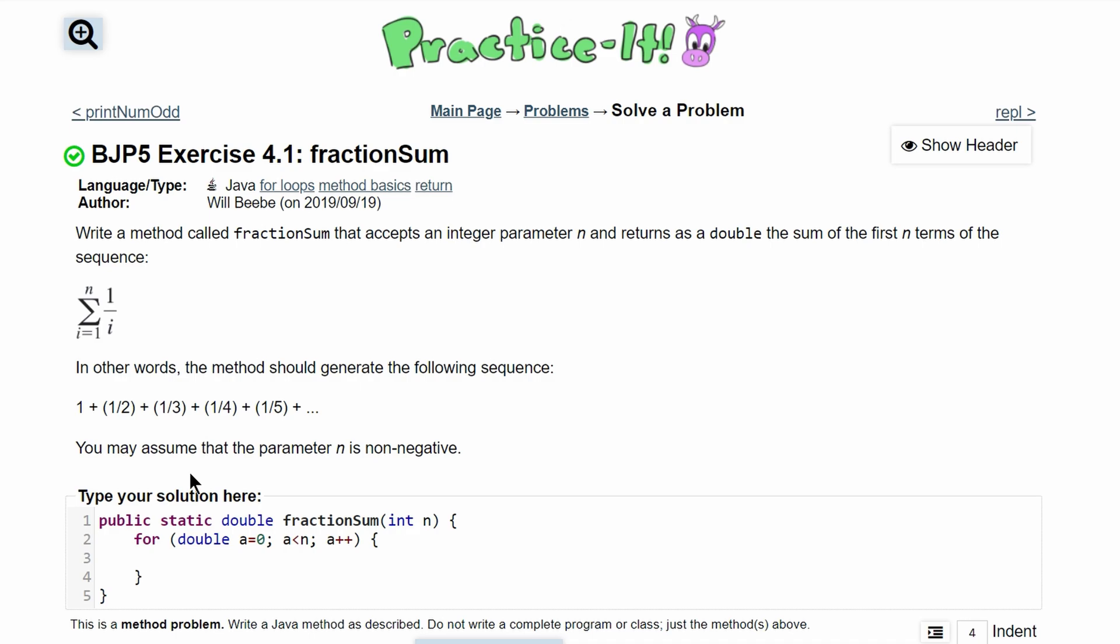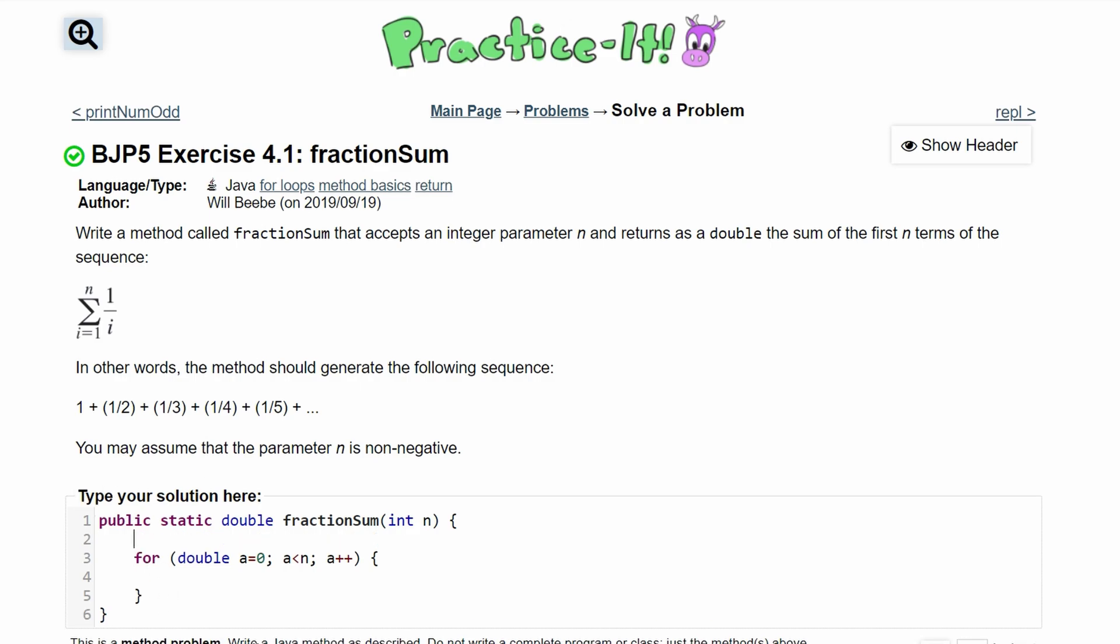Inside our for loop, we need to add all of these together, but we need to store this in a variable outside of our for loop. Since we're dealing with doubles, it has to be a double. So we'll do double sum and initialize it to 0, that way we don't have anything messing it up before we add everything in. Then we know we have to return a double, which will just be sum.